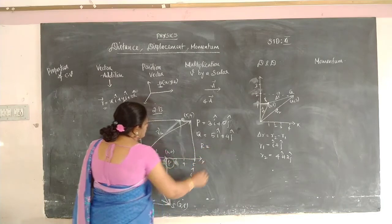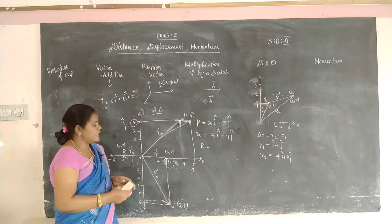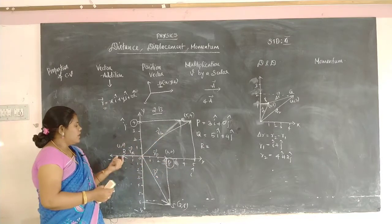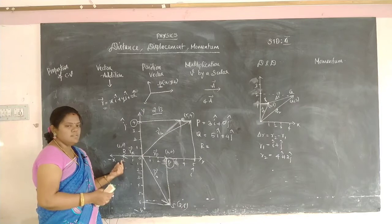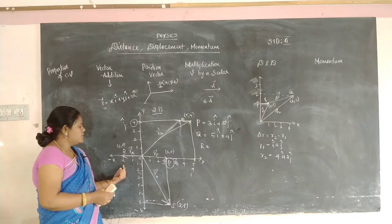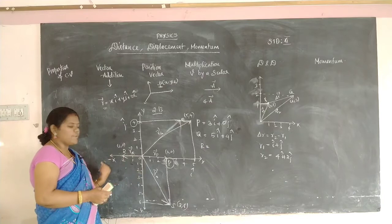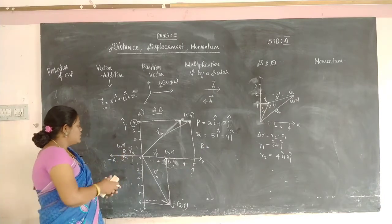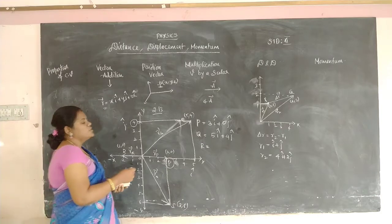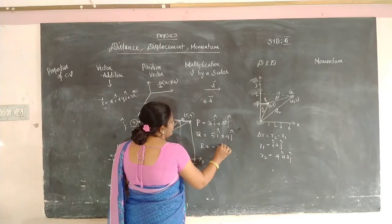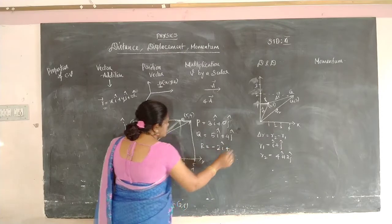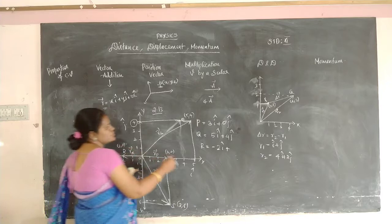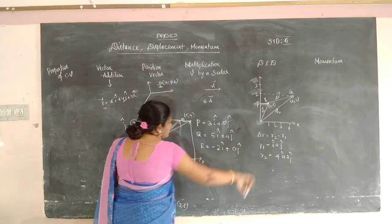Now the position vector R. R is located at X-axis 2 but in the negative X direction, so minus 2. Y-axis is 0. So R's position vector = −2·i + 0·j.